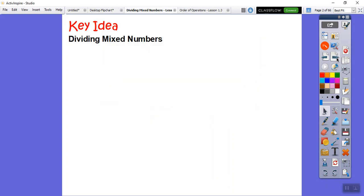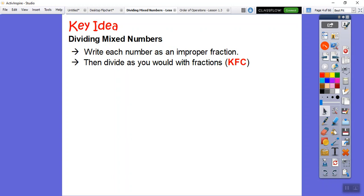Here's our key idea on dividing mixed numbers. Write each number as an improper fraction, and then we do the same what we did with fractions: keep flip change. Keep the first fraction, flip the second fraction, and change the division to a multiplication.